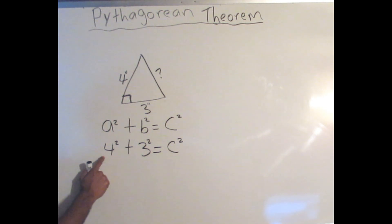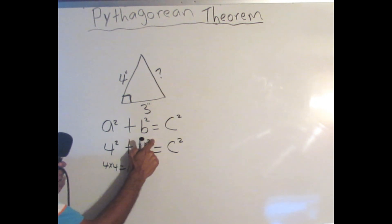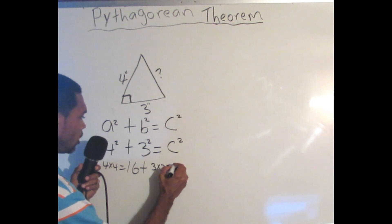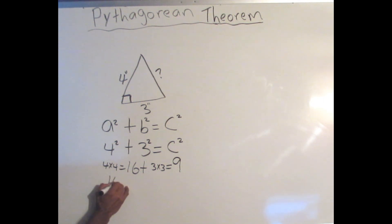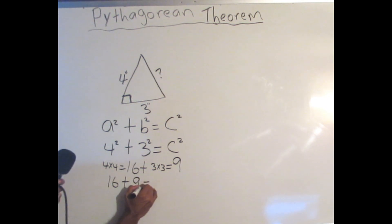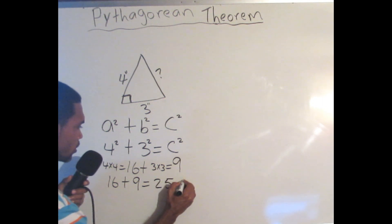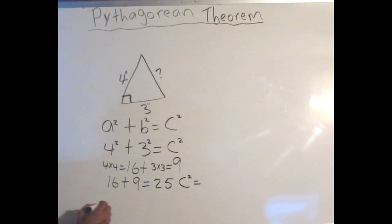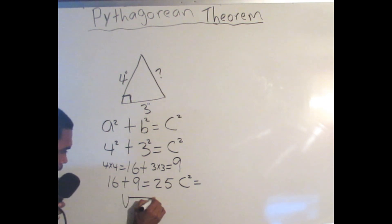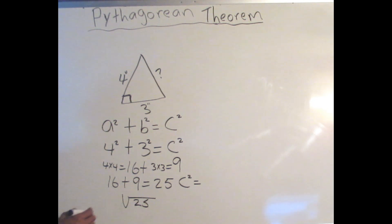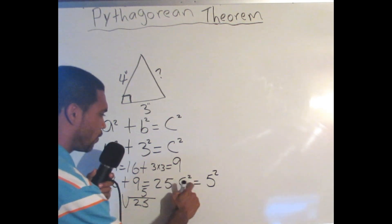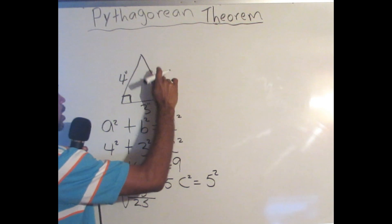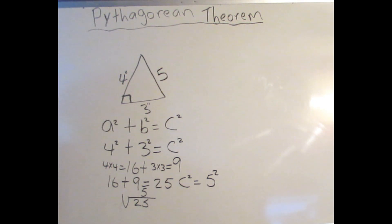Remember: 4 squared is not 4 times 2 — it's 4 times 4, which equals 16. And 3 squared is not 3 times 2 — it's 3 times 3, which equals 9. So 16 + 9 = 25. The square root of 25 is 5, so c = 5. We know this is correct because 5 squared is 25. So we erase the question mark and the answer is 5.